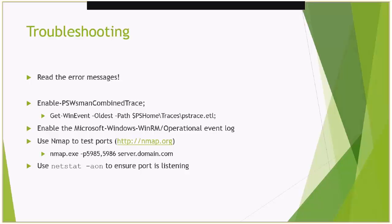Since we're dealing with network connectivity, NMAP is always a useful tool, as is NETSTAT. On the client side, use NMAP to test ports 5985 and 5986 on the server you're trying to connect to. On the server, run NETSTAT -AON and make sure there is actually a listener on port 5985 and 5986 for the client to connect to.